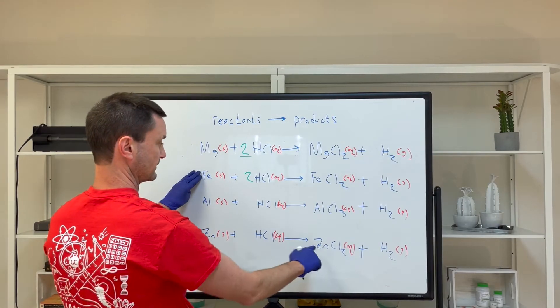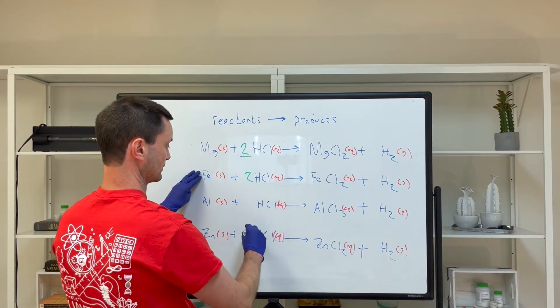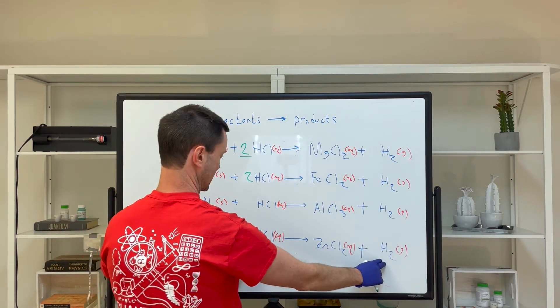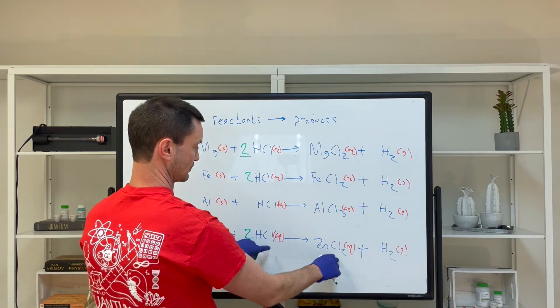The zinc reaction has the same form with Cl2 and Cl2, so I put a two there. One zinc, one zinc, two hydrogens, two hydrogens, two chlorines, two chlorines. We're good.